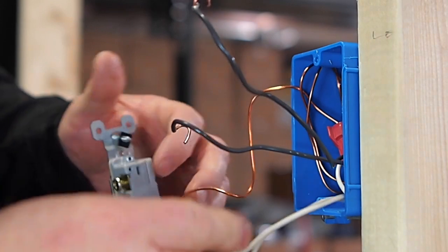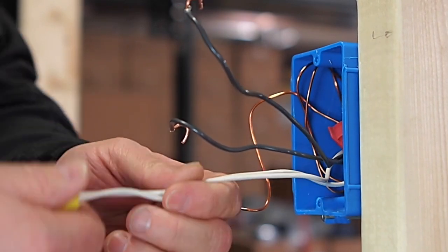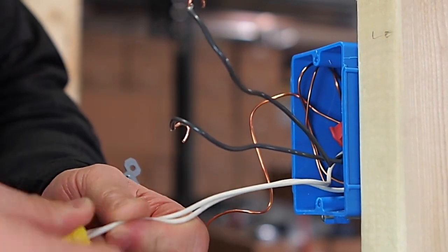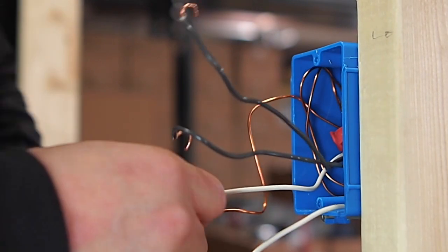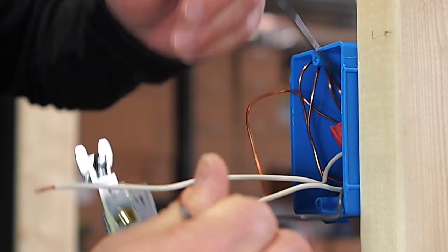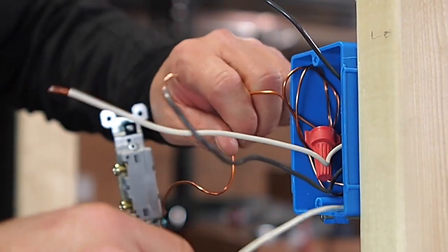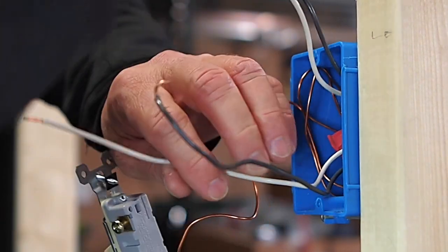Separate these. What we need to find is the power to this box is coming in from the bottom and then it is going up to the fan out the top of the box. What we need to do is find the black and the white that is going up. We are going to use those back on the switch.